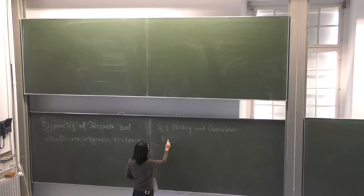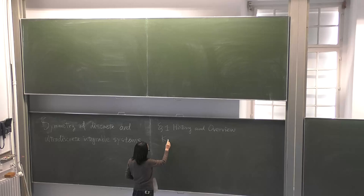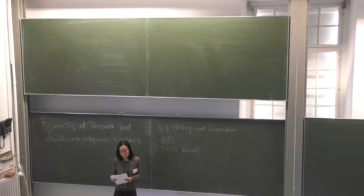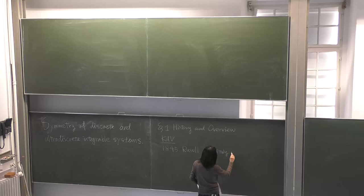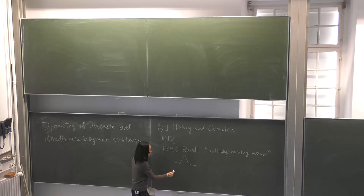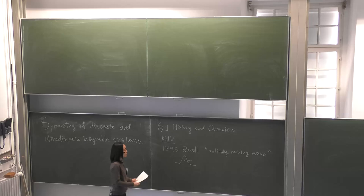I'll start with the discovery of the KdV equation in 1845 by Russell. He found a solitary wave in a canal in England — the shape of the wave is preserved, the velocity is constant, and one day he found this interesting phenomenon. It was then difficult to formulate this as an equation.